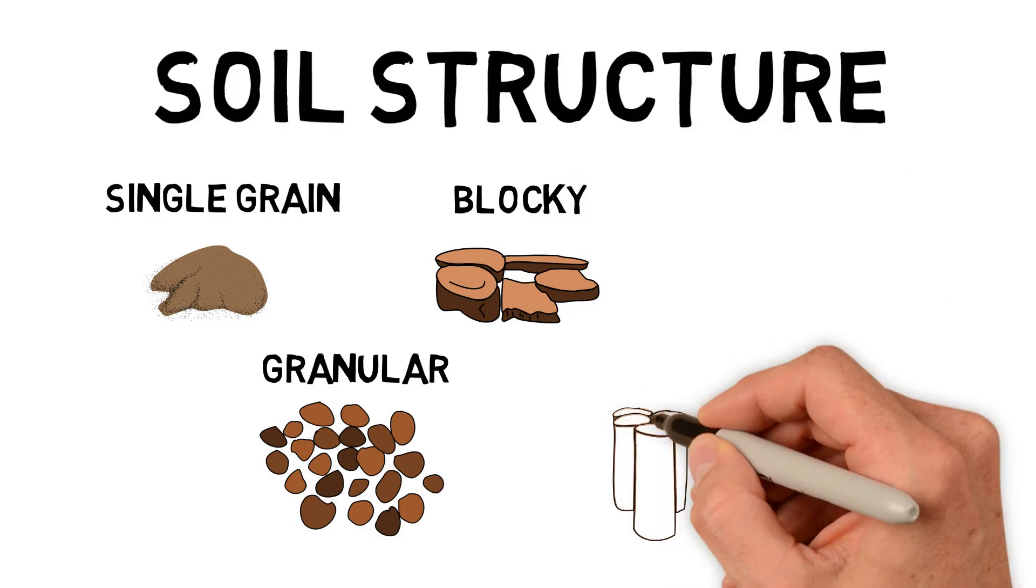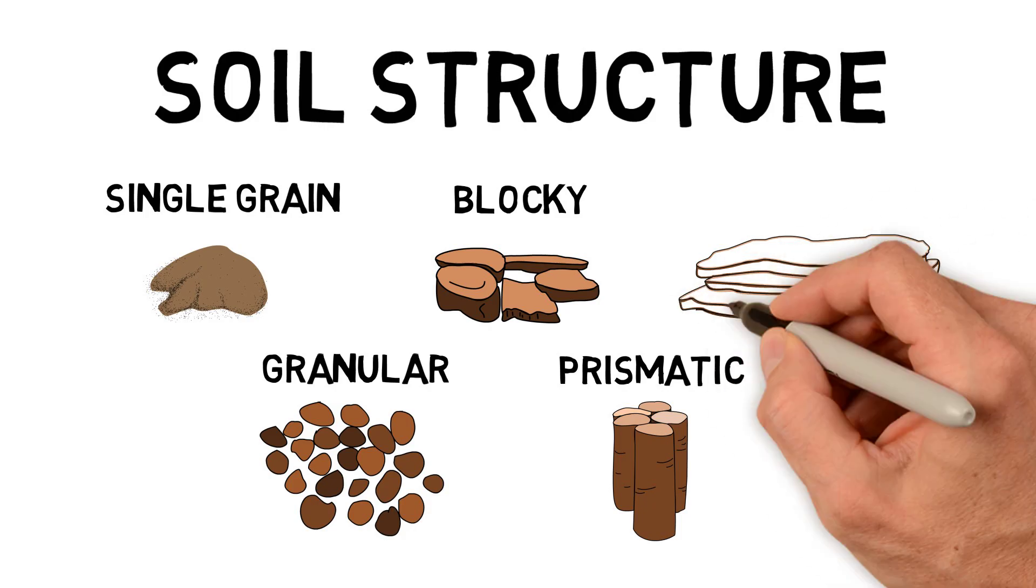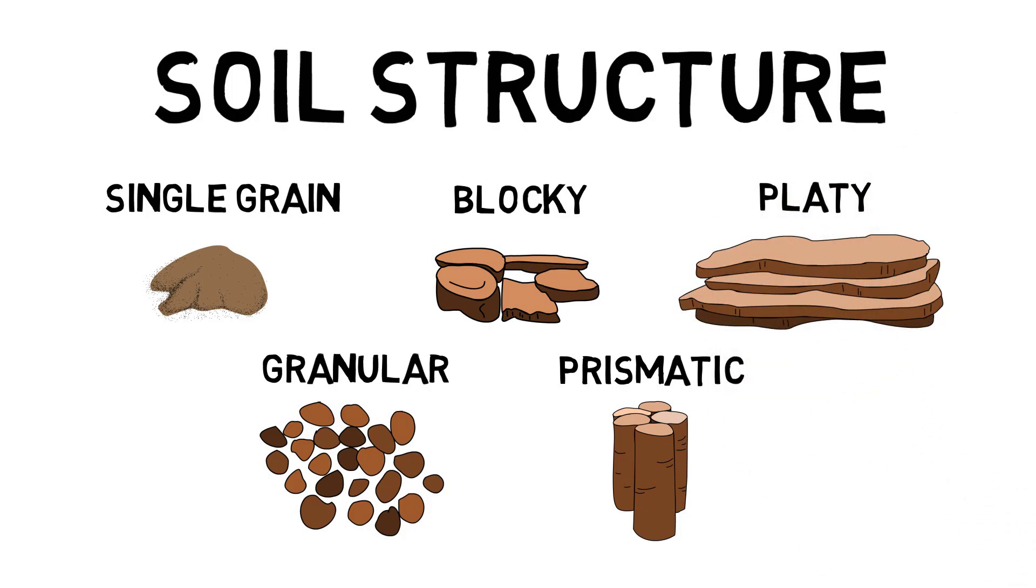Then you have prismatic, which form almost column-like structures in the soil. And one of the worst is platy, when the soil will form aggregates that are almost like plates stacked on top of each other. And these soils are very bad about letting water infiltrate into the soil and about allowing roots to really penetrate and grow down.